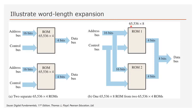People often ask how I get 64k. 1k is equal to 1024 registers in memory, so 64k is actually 64 times 1024, which gives us 65536. Let's go to the next slide and see how we can do something like this.